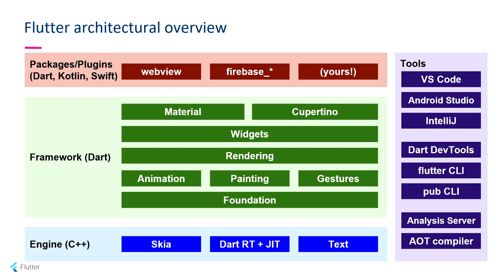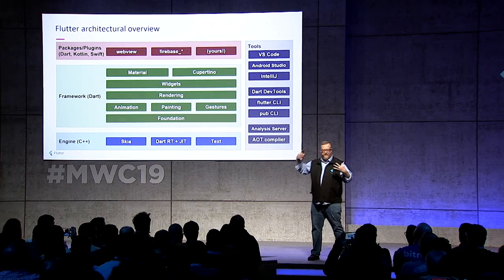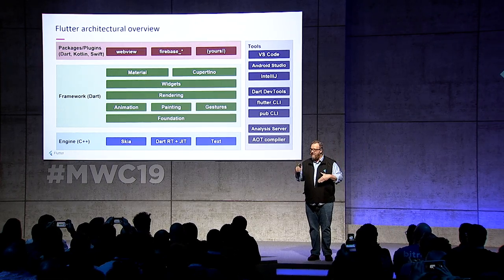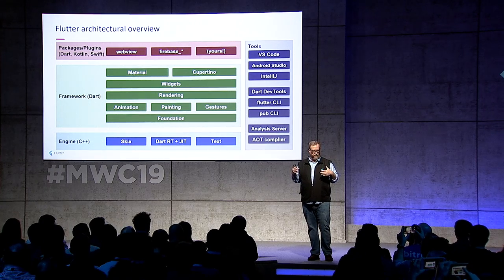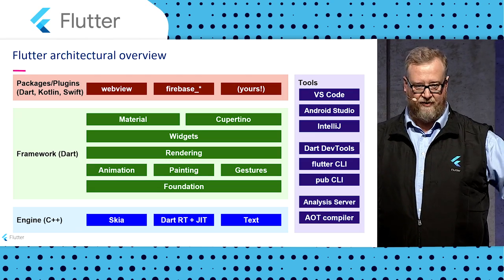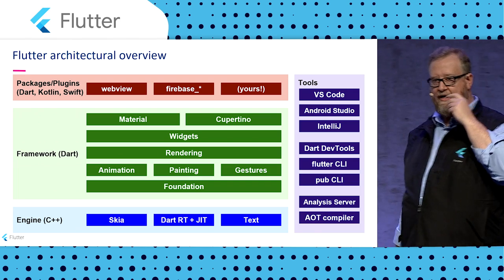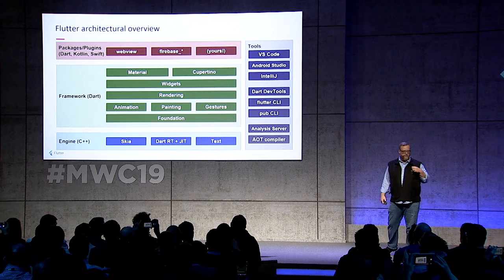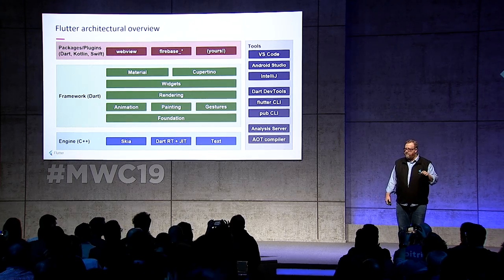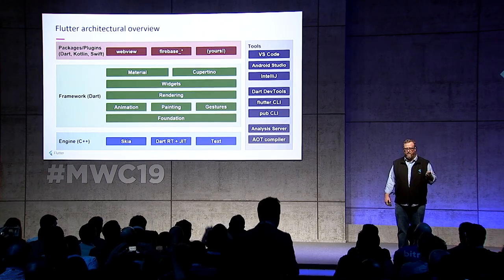My name is Chris, and I am the product manager for the Flutter developer experience. Any architecture we want should be layered — we don't want it intermixed. We want it to be easy to extend Flutter, whether on top by building apps, in the middle by forking it, or by adding functionality in between. At the bottom of the architecture is the engine, built in C++ code — it's meant to be the fastest possible thing it can be, doing low-level drawing and rendering. We also have the Dart runtime and JIT at that bottom level.